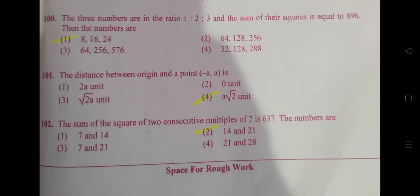Question number 102: the sum of the squares of the two consecutive multiples of 7 is 637. The numbers are 14 and 21.